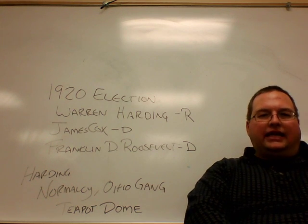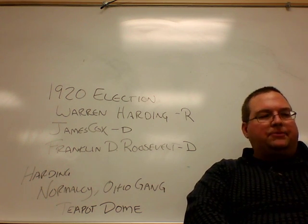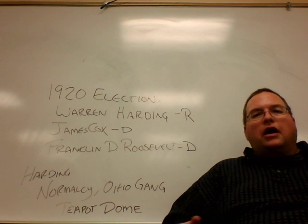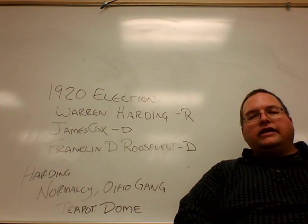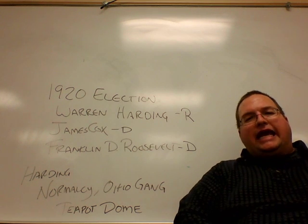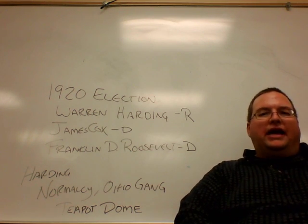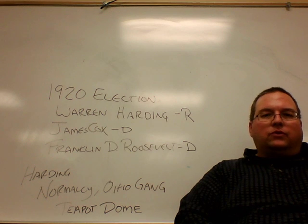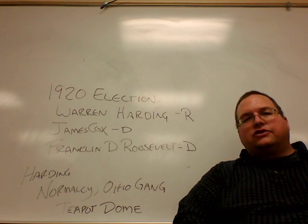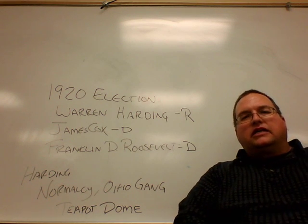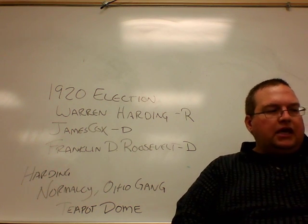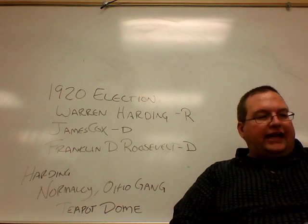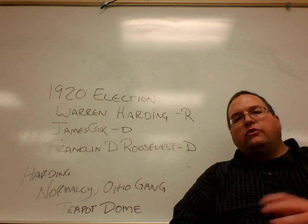Harding wins this election in 1920 because he makes a promise to the American people: a return to normalcy, or a departure from the progressive movement. Harding says with the word normalcy he is going to lead America back to what they do best — make money and have children. In economics, this means an end to trust busting and a return to laissez-faire economics. In foreign policy, this would mean disarmament and isolationism. This normalcy reflected Harding's conservative values and his folksy personality.